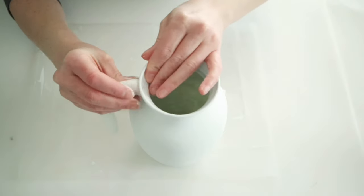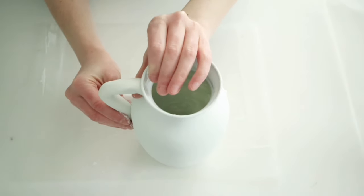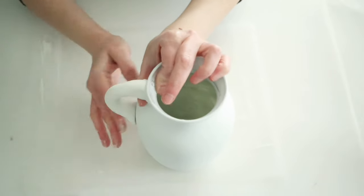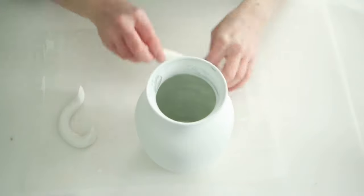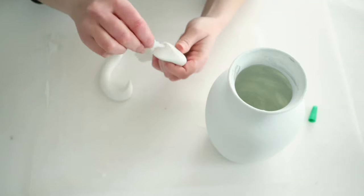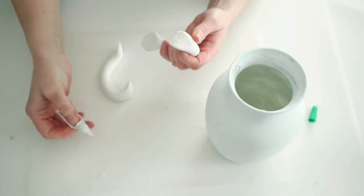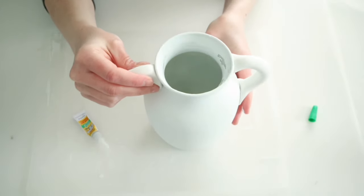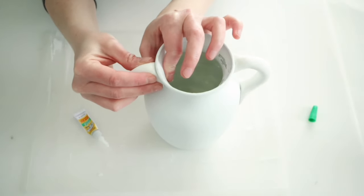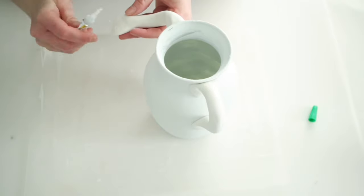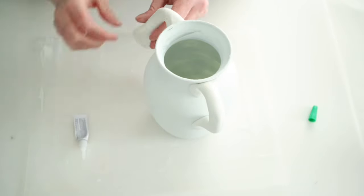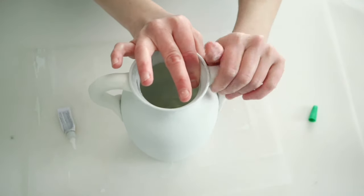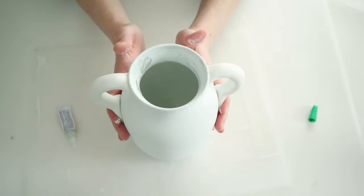So once I had my handles all rolled out, I just kind of started playing with them on the vase. You can see I had to remove some of the clay. They were a little too big, but once I got them how I wanted them, I just kind of squished it and shaped it. And then I'm going to use some of Dollar Tree's gel super glue to attach these.